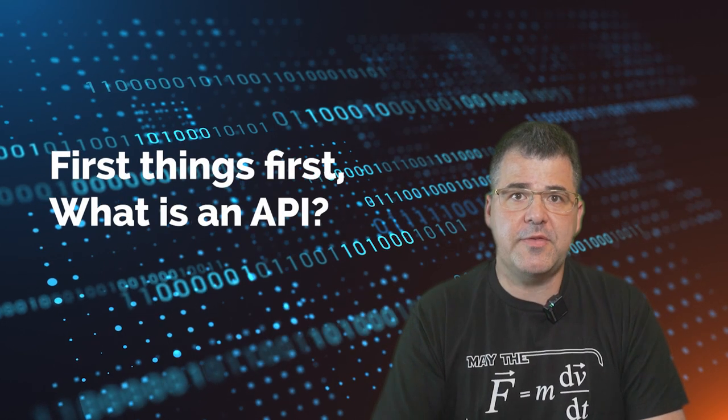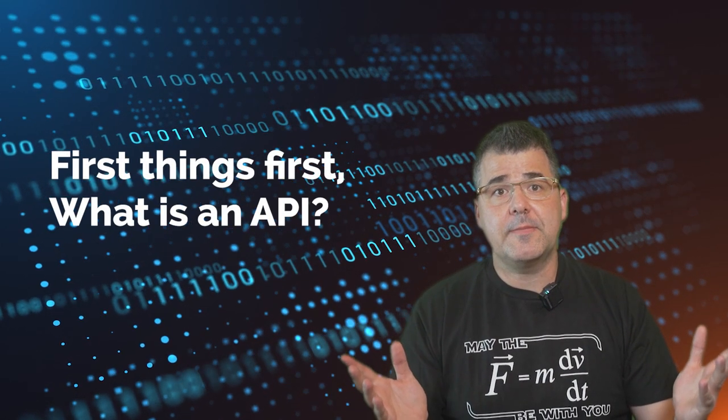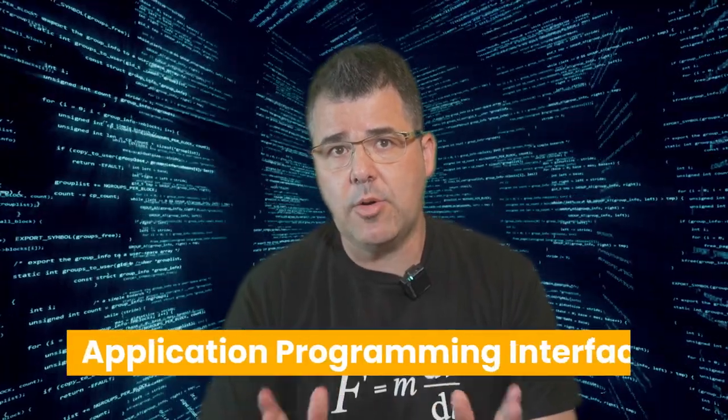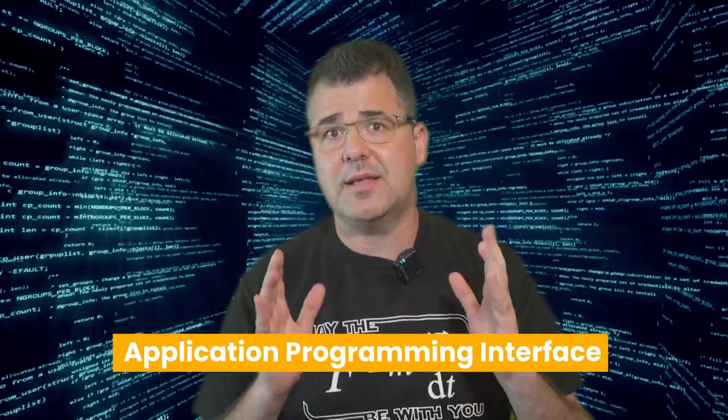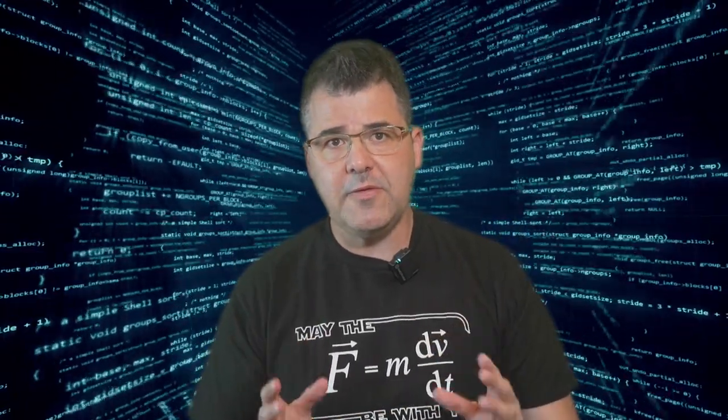First things first, what is an API? An API stands for application programming interface, and an API is a set of programming instructions that allow one piece of software to interact with another. In other words, it's a way for different software to talk to each other.